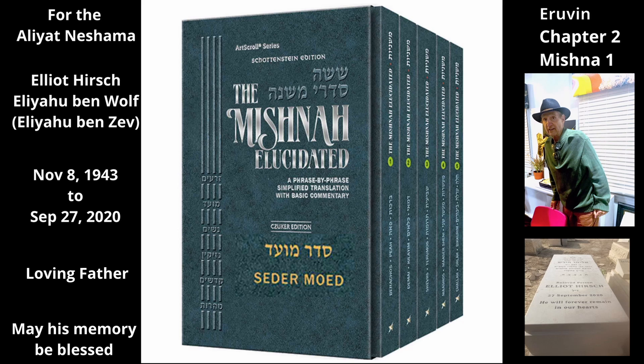But Rabbi Yehuda says the gap between them may be as wide as two teams of four oxen each. A single team of four oxen is six and two-thirds amos — parenthetically, four times one and two-thirds amos — and two such teams are thirteen and one-third amos wide. According to Rabbi Yehuda, then, a gap of thirteen and one-third amos is permitted between double posts. Only if the gap is wider than thirteen and one-third amos must straight posts be erected to narrow it.